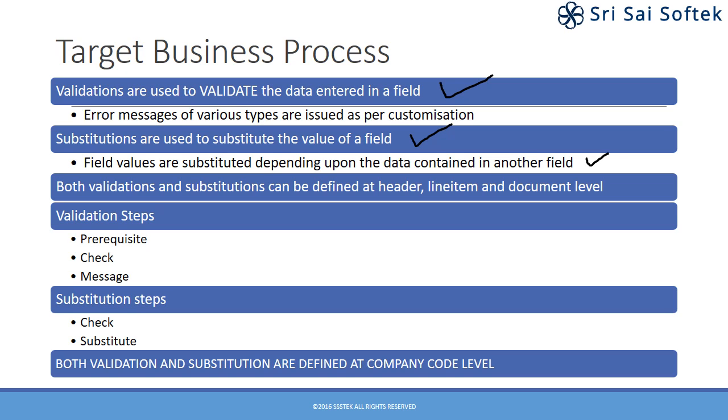Both validations and substitutions can be defined at header, line item, or document level. These are the triggering points.